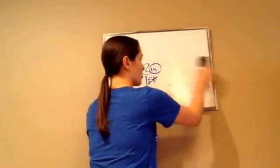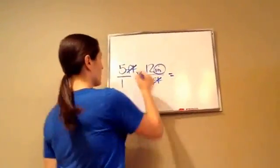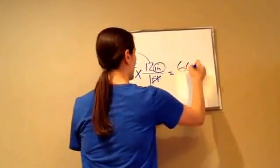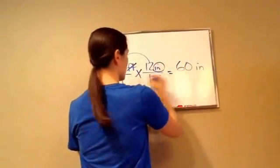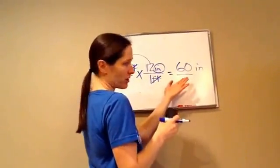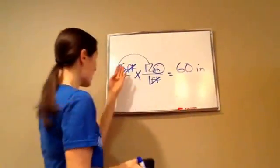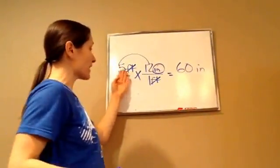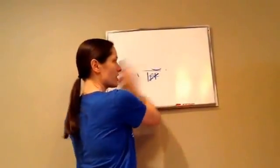So I'm going to use this unit multiplier. Now we just multiply: 5 times 12 is 60, and I've got my inches. Then 1 times 1 is 1, and you don't even have to write it over 1 — just 60 inches. So how much is 5 feet? 60 inches. That's how we do unit multipliers.